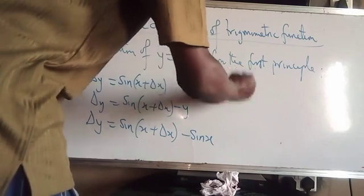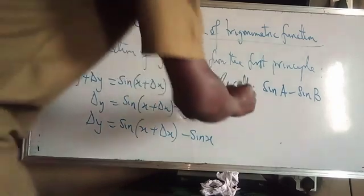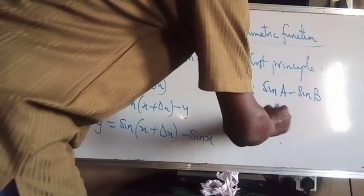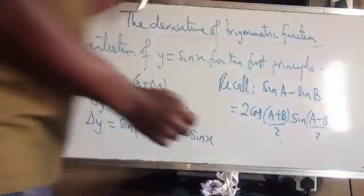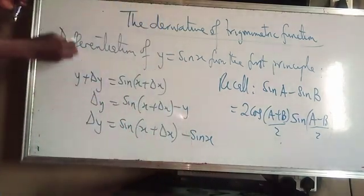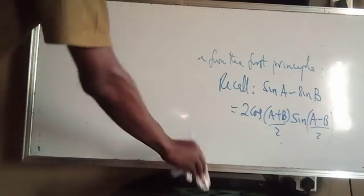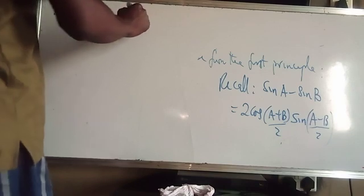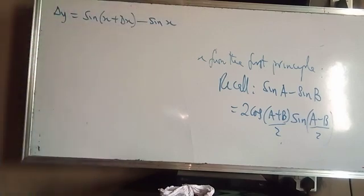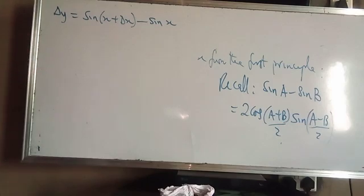Recall, this looks like a sum-to-product formula. Recall that sine A minus sine B is equal to 2 cos of (A plus B) over 2, times sine of (A minus B) over 2. If you remember, we covered this in the previous class on trigonometry. Note that the addition version — sine A plus sine B — would give 2 sine of (A plus B) over 2 times cos of (A minus B) over 2, which is the inverse of that.